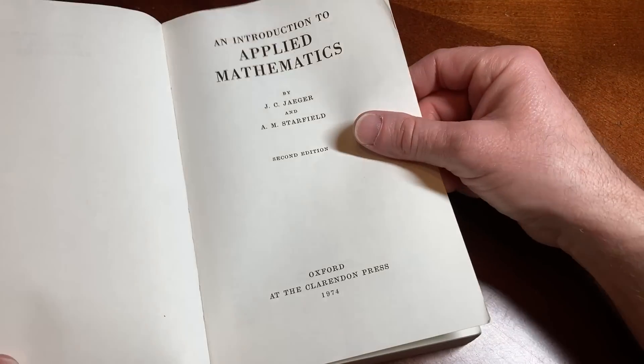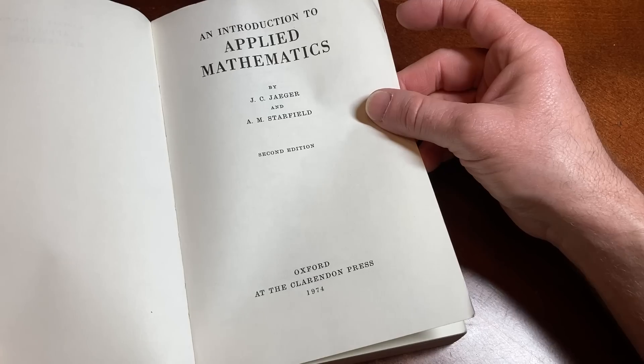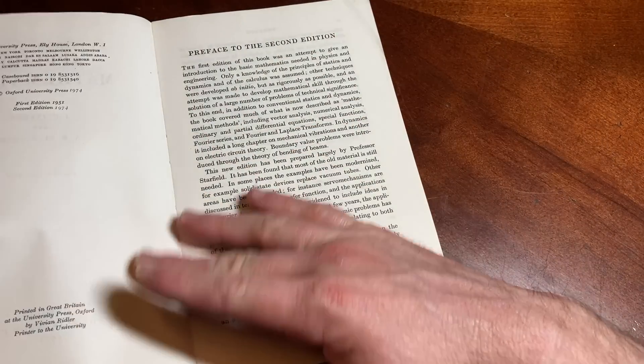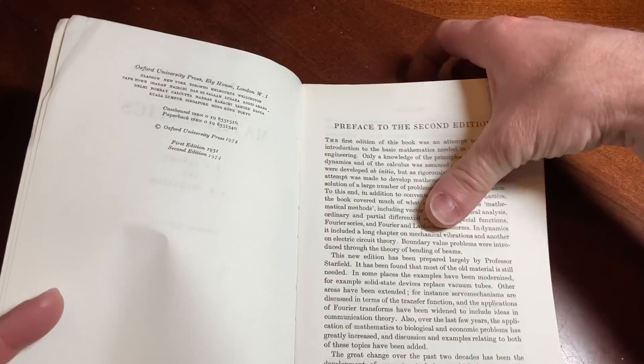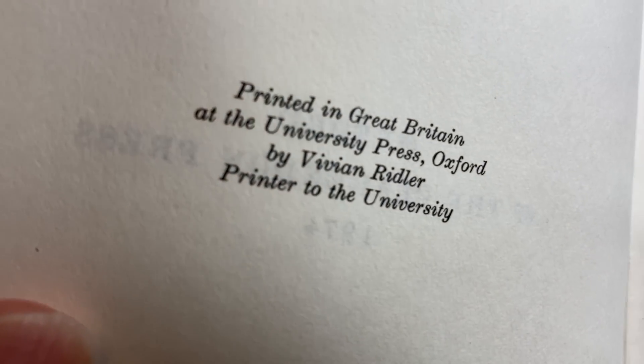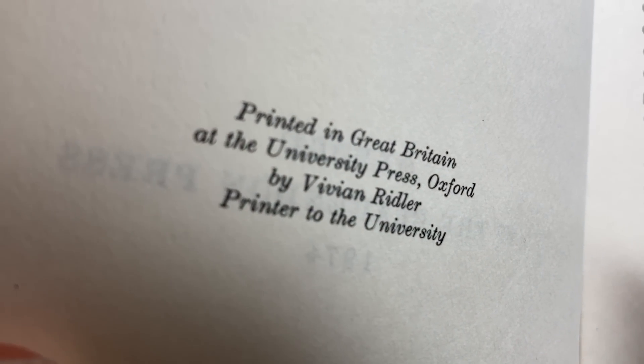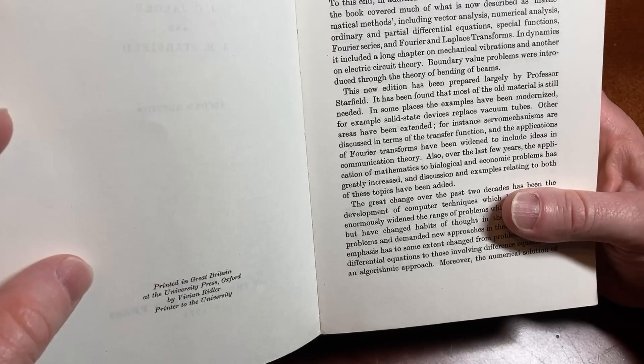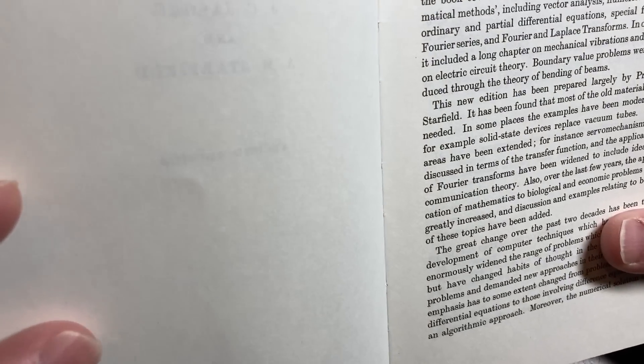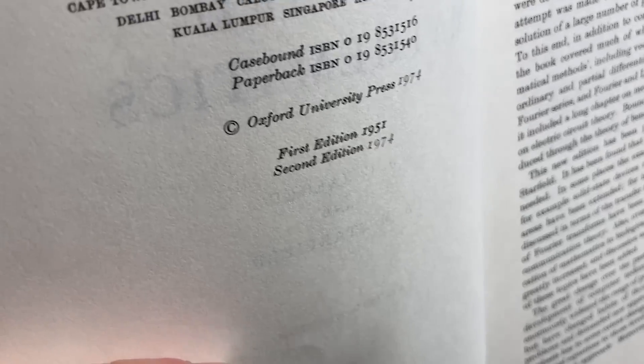1974, Oxford at the Clarendon Press, it says. Oh, it's printed in Great Britain. Look at that. At the University Press, Oxford by Vivian Riddler, Printer to the University. How cool is that? First edition 1951. This one's from 1974.